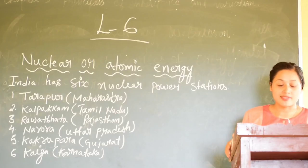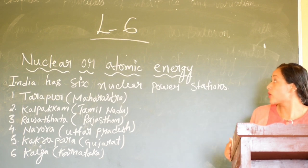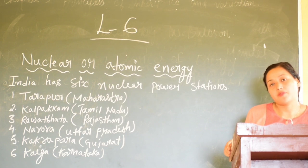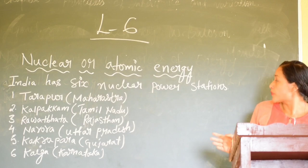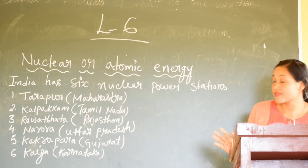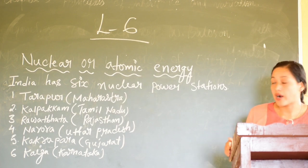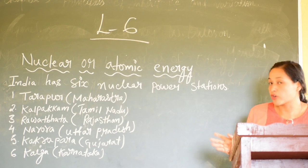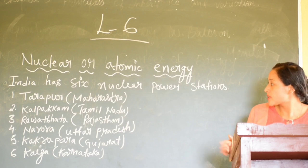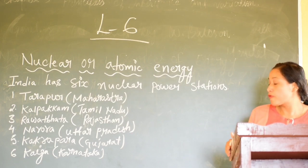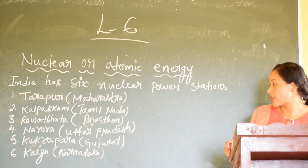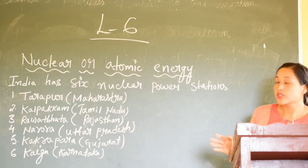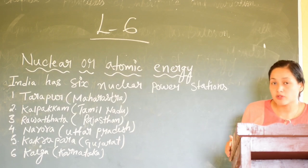The next topic from this lesson is nuclear or atomic energy. It is very important and will be useful for your map plotting. The nuclear power stations located in India — we have six. One, Tarapur, located in Maharashtra. Two, Kalpakkam, located in Tamil Nadu. Three, Rawatbhata, located in Rajasthan. Four, Narora, located in Uttar Pradesh. Five, Kakrapar, located in Gujarat. And six, Kaiga, located in Karnataka. These are the six nuclear power stations located in India.